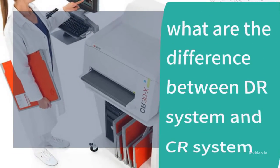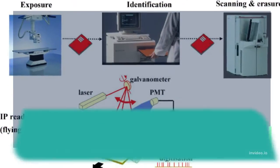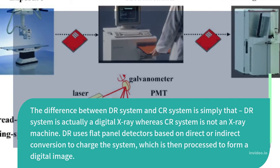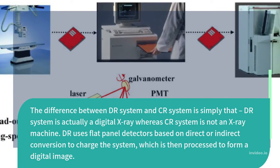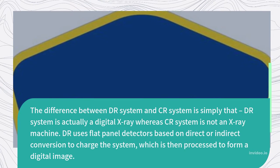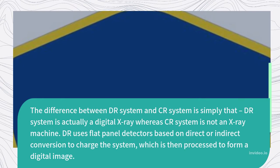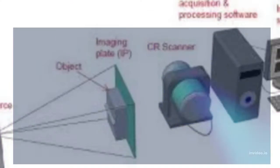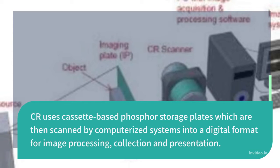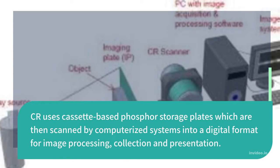What is the difference between DR and CR systems? The difference is simply that a DR system is actually a digital X-ray, whereas a CR system is not an X-ray machine. DR uses flat panel detectors based on direct or indirect conversion to charge the system, which is then processed to form a digital image. CR uses cassette-based phosphor storage plates, which are then scanned by computerized systems into a digital format for image processing, collection, and presentation.